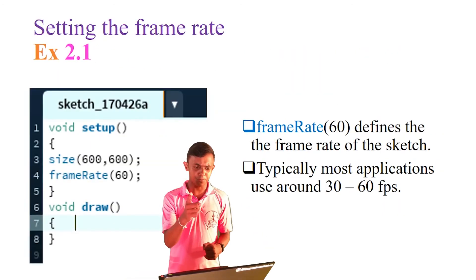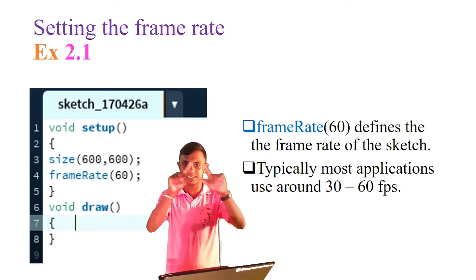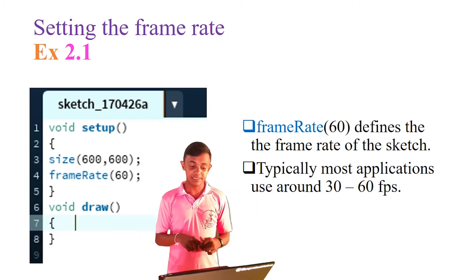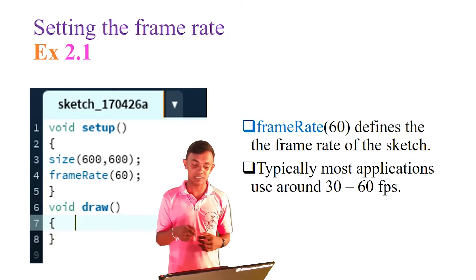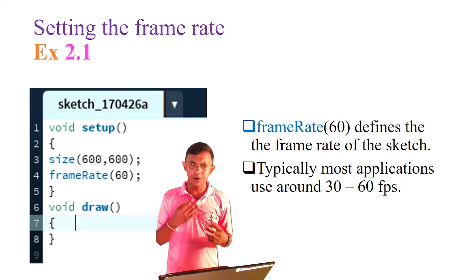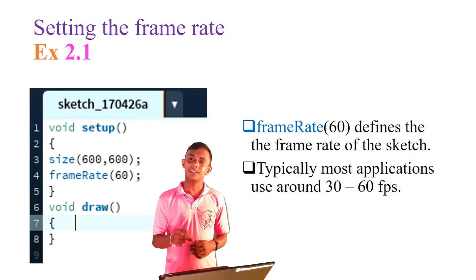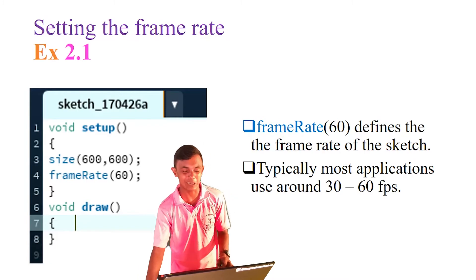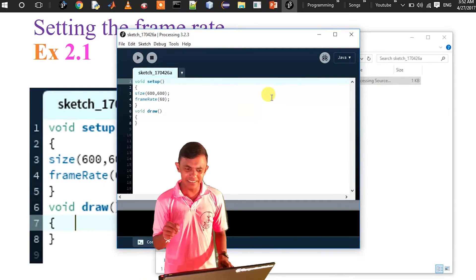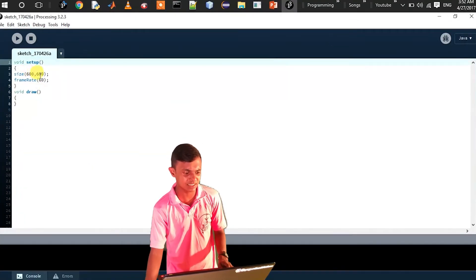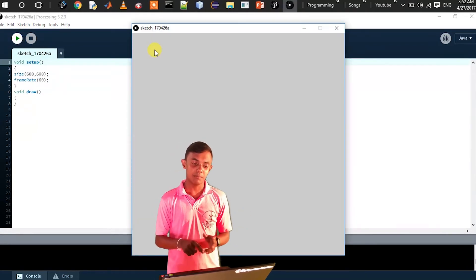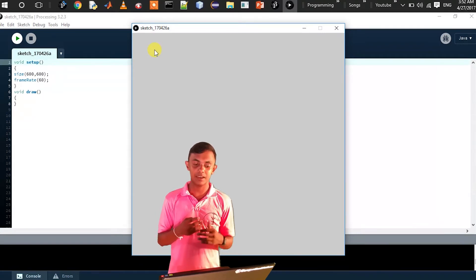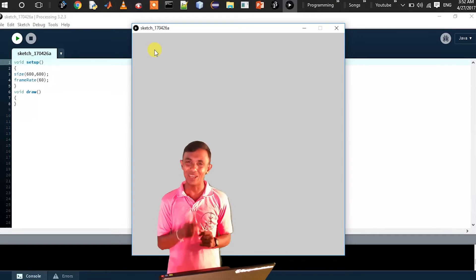In example 2.1, we can define the size of the sketch — 600 by 600. We can add the frameRate. The frameRate function — F lowercase, R capital. We pass the parameter, for example 60, so draw is called 60 times per second. We will open the processing environment for example 2.1, add the sketch with void setup, add 600 by 600, and add the frameRate. We can also define void draw. The frameRate creates a visible animation effect.